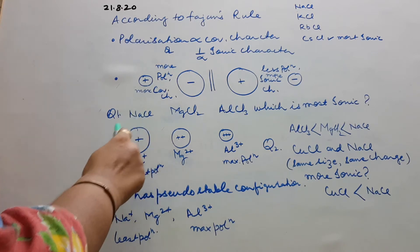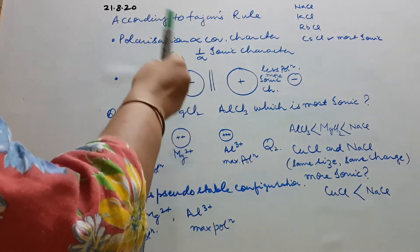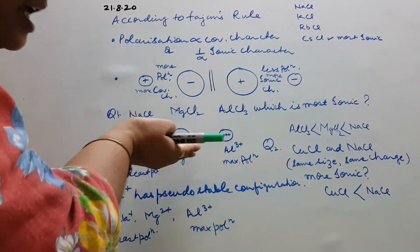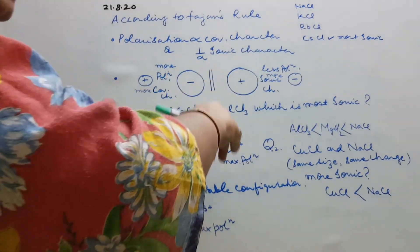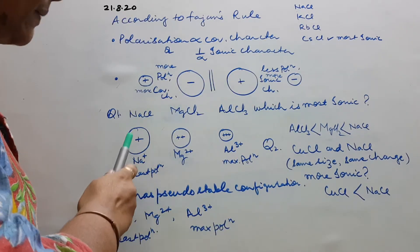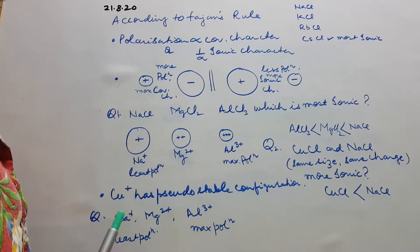here Na, you know, the biggest in size and one charge. Here Mg, we are moving left to right, size decreases, and the two positive charge further decreases, means smaller in size. Al, you are further moving that side, size smaller, plus three charges. As the positive charge increases, size decreases. So Na+ the largest, Mg2+ in between, and Al3+ the smallest.